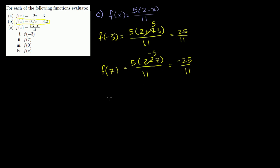And then finally, we have two more. f of 0. That's equal to 5 times 2 minus 0 over 11. So this is just 2. 5 times 2 is 10. So this is equal to 10 over 11. One more.